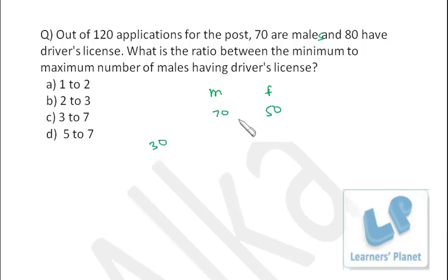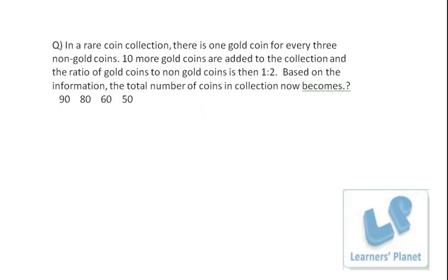And at max, all the 70 males can have driver's license. In all, 80 persons are having driver's license, so if 70 males are having driver's license then 10 female candidates will be there who will be having driver's license. So maximum is 70 and minimum is 30, so ratio of minimum to maximum is 3 is to 7, as simple as that.